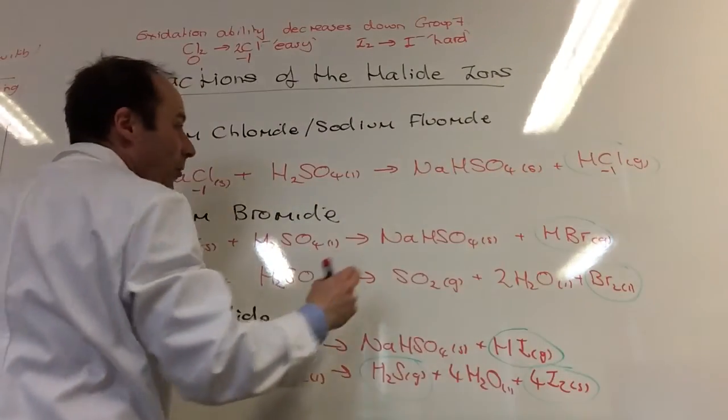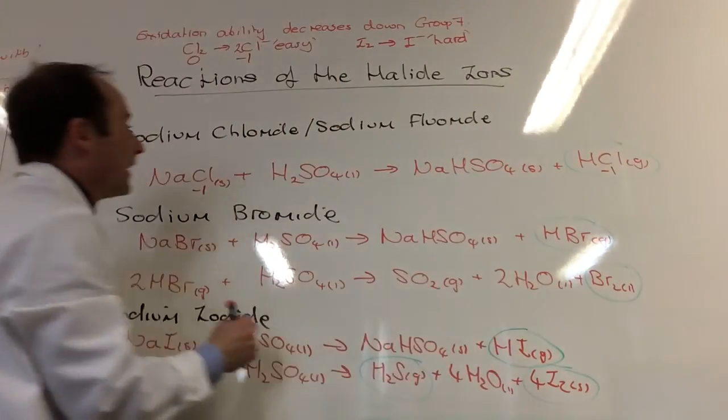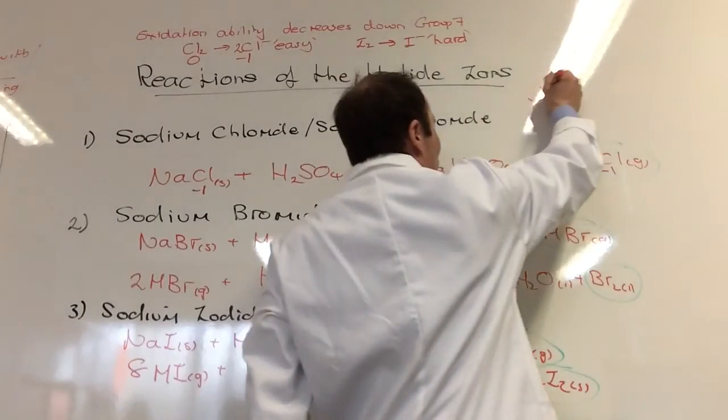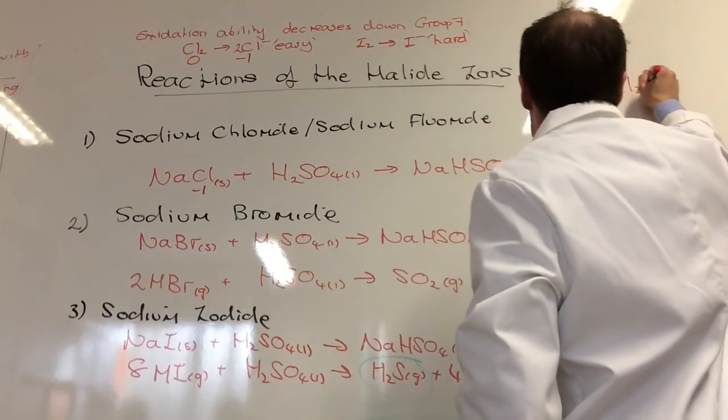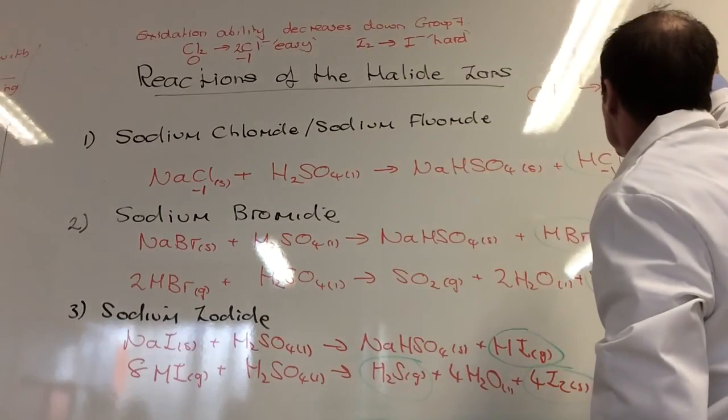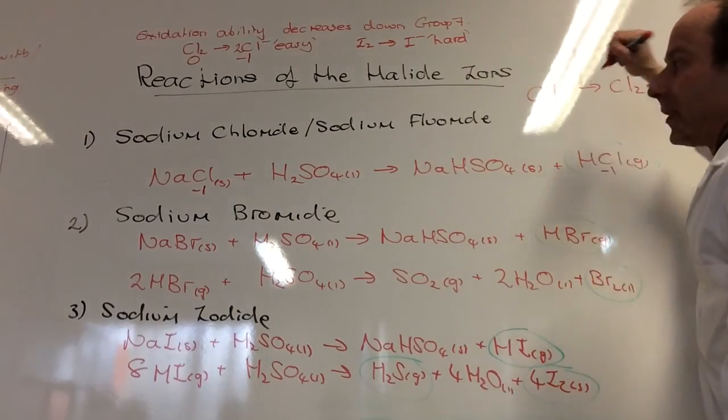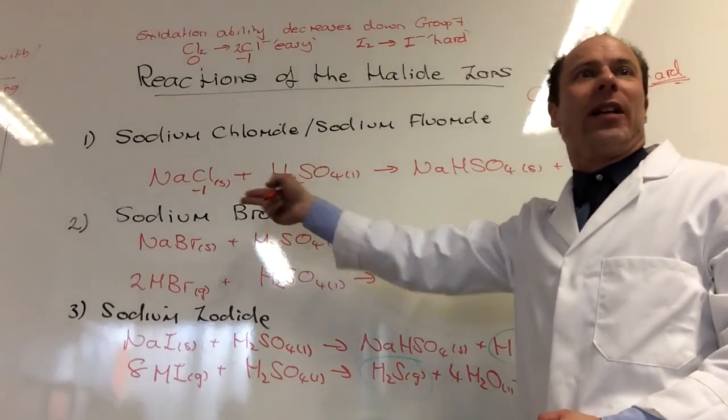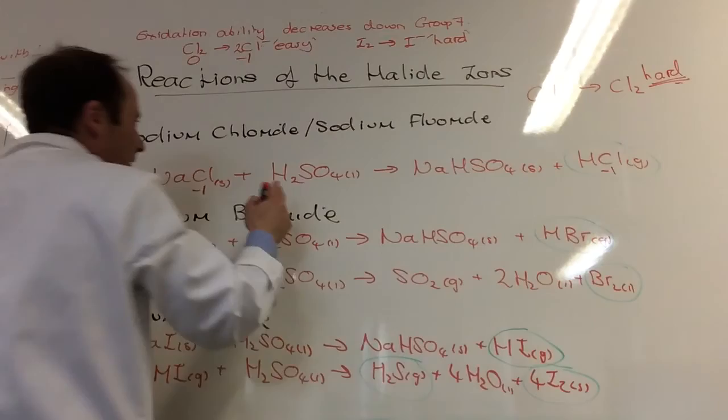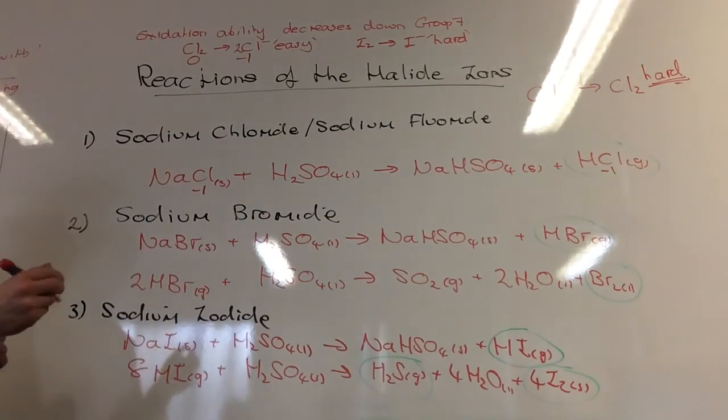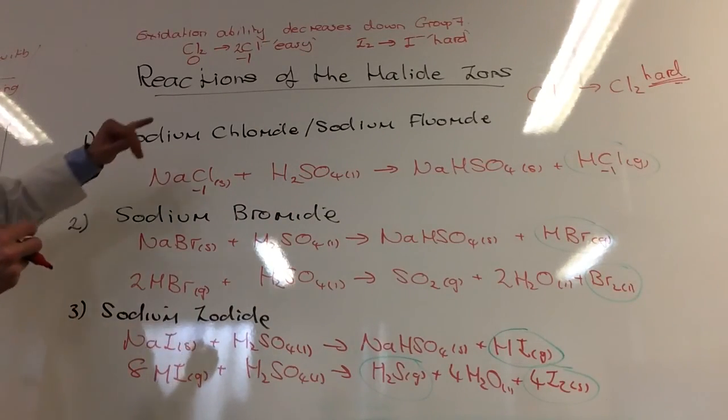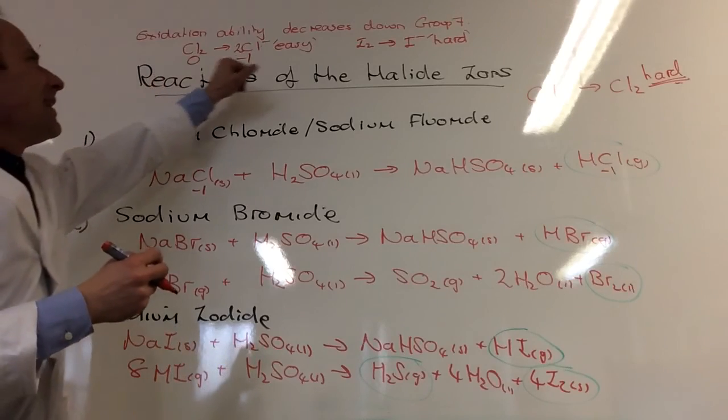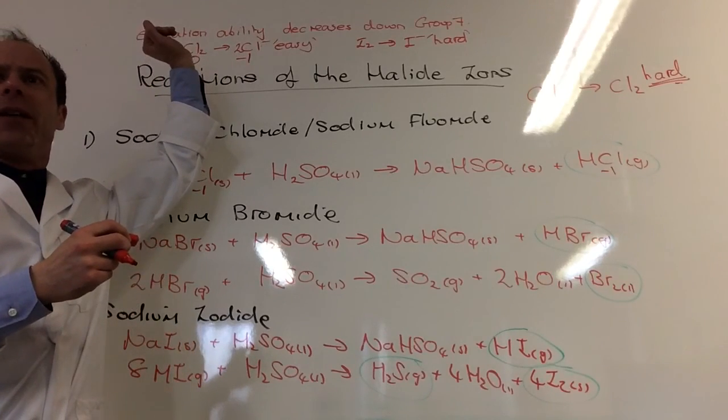Chloride has not been able to become chlorine. So chloride becoming chlorine is hard. It doesn't want to do that. Sulfuric acid can't do that. Chloride is not going to go to chlorine. Which makes sense. Does everybody have that make sense? Because if this is easy, then going the opposite way is going to be harder.